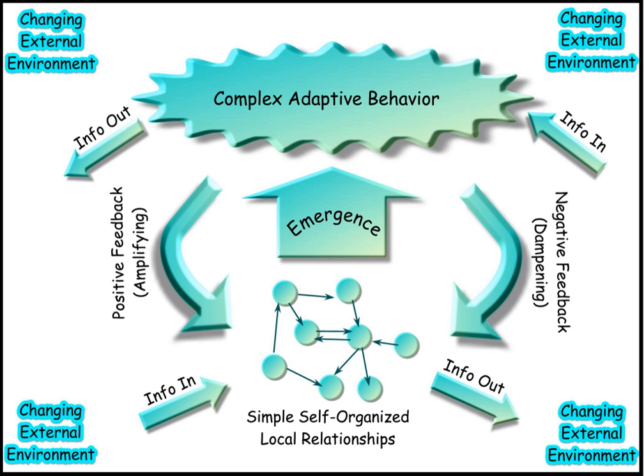Systems design is the process of establishing and specifying the optimum system component configuration for achieving a specific goal or objective. For example, in computing, systems design can define the hardware and systems architecture, which includes many sub-architectures including software architecture, components, modules, interfaces, and data, as well as security, information, and others, for a computer system to satisfy specified requirements.